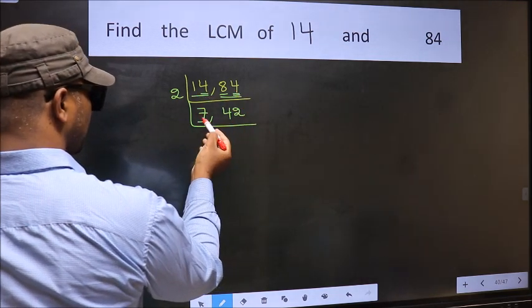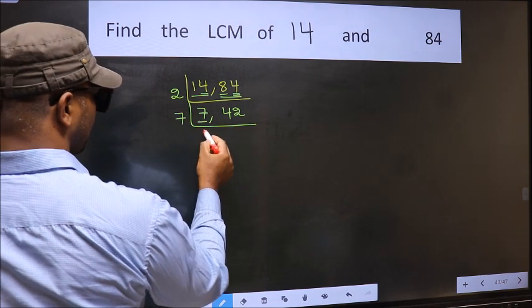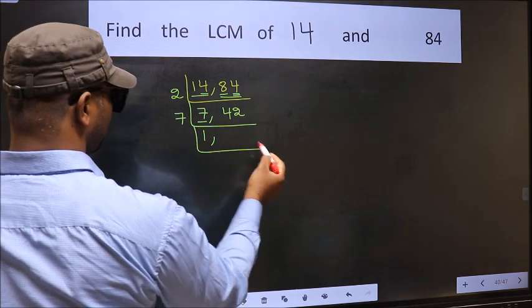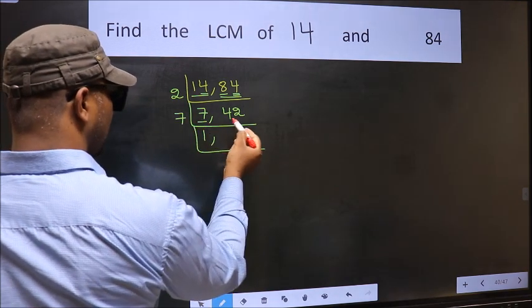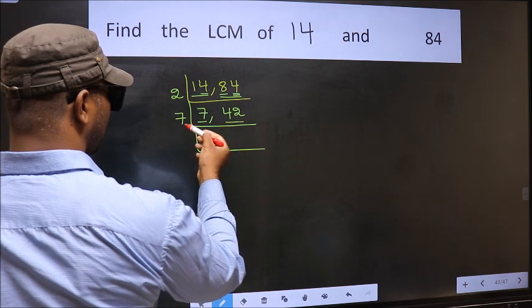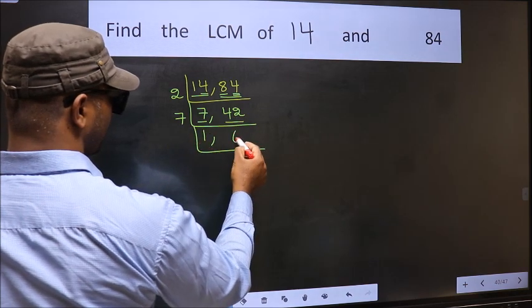Now here we have 7. 7 is a prime number, so 7 once is 7. The other number is 42. When do we get 42 in the 7 times table? 7 times 6 is 42.